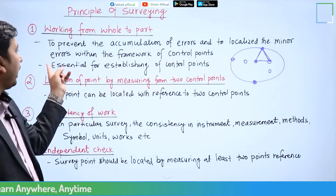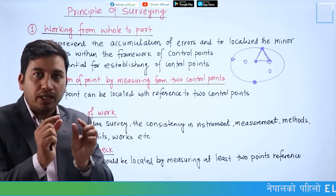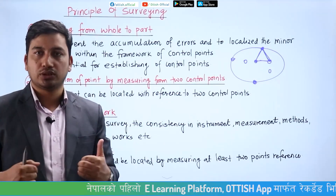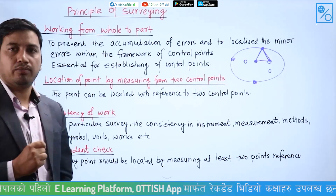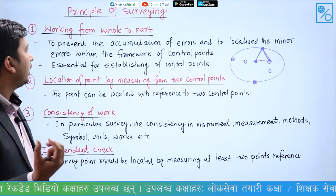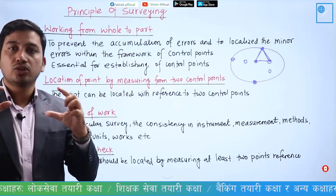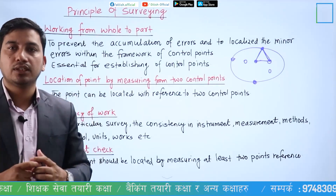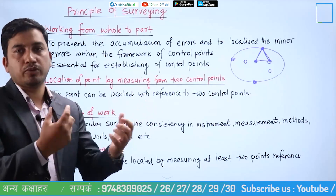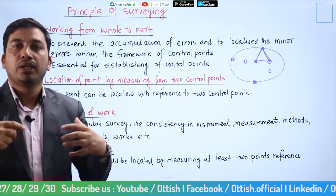You can localize minor errors within the framework of the control point. Within a limited or intermediate control point, you can cancel out and minimize the error. When you start from a larger framework and expand, you can add accuracy. Normally, the 1st order, 2nd order, 3rd order, and 4th order control points are established by the survey department — this is the principle of working from whole to part.